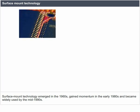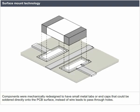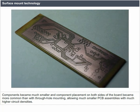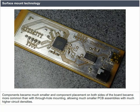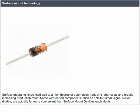Surface mount technology emerged in the 1960s, gained momentum in the early 1980s and became widely used by the mid-1990s. Components were mechanically redesigned to have small metal tabs or end caps that could be soldered directly onto the PCB surface instead of wire leads passing through holes. Components became much smaller and placement on both sides of the board became more common, allowing much smaller PCB assemblies with much higher circuit densities.